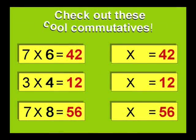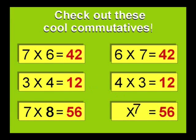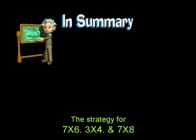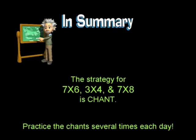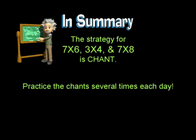Check out these cool commutatives. The strategy for seven times six, three times four, and seven times eight is chant. Practice the chant several times each day.